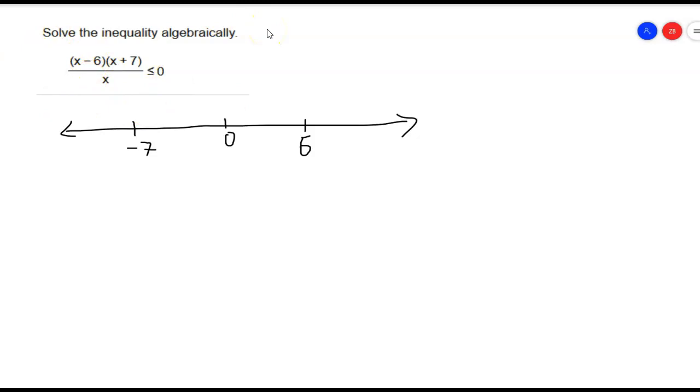So if I put them all down and I check a value between in each one of these intervals, I can see whether it's negative or positive. And I'm going to use my calculator for that.